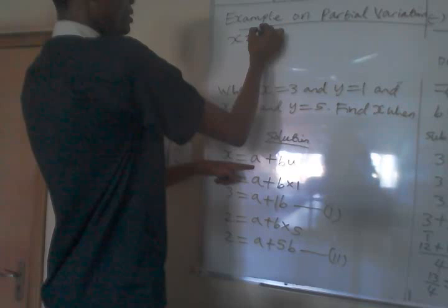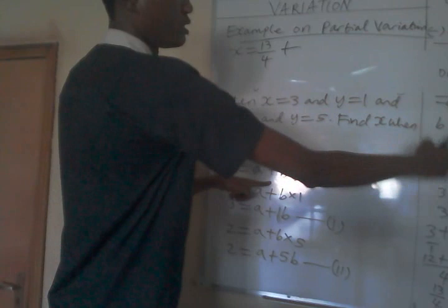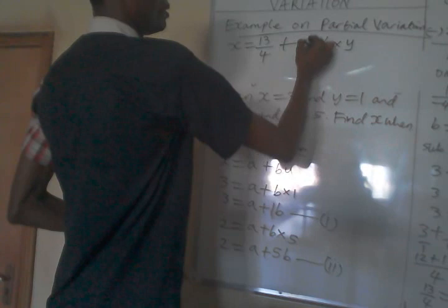It means we have x equal to what is our a: 13 over 4 plus what is our b, that is minus 1 over 4, times y.